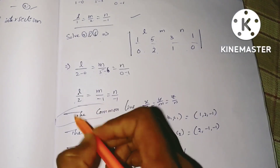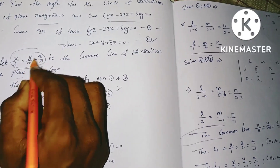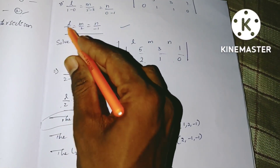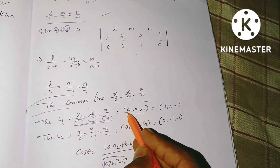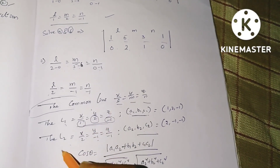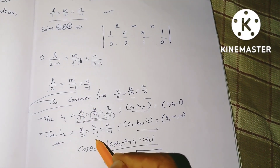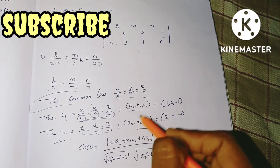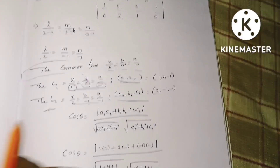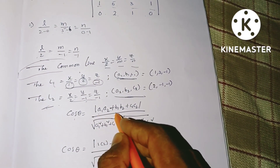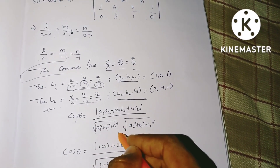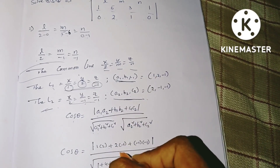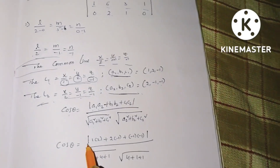Now we write the two line equations. The common line is x/l = y/m = z/n. Line 1: x/1 = y/2 = z/(−1). Line 2: x/2 = y/(−1) = z/(−1). We use the cos θ formula: cos θ = |a1·a2 + b1·b2 + c1·c2| / (√(a1²+b1²+c1²) × √(a2²+b2²+c2²)). Substituting: numerator = 1×2 + 2×(−1) + (−1)×(−1), denominator = √(1+4+1) × √(4+1+1) = √6 × √6.